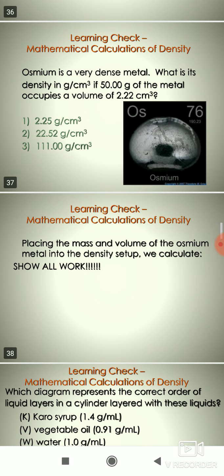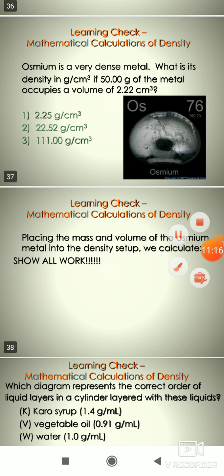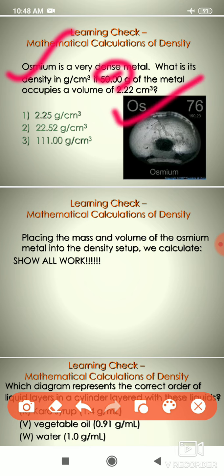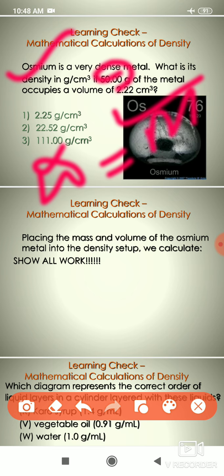Check your understanding of density. Question: Osmium is a very dense metal, meaning its mass should be heavier. What is its density in g/cm³? We calculate density in g/cm³ or kg/m³. In this case, mass is 50 g and the metal occupies a given volume. Density = mass / volume, so we divide 50 g by 2.2 cm³ to get the solution.